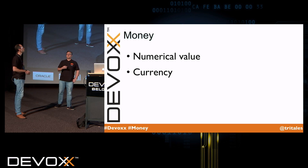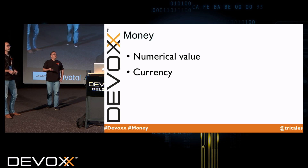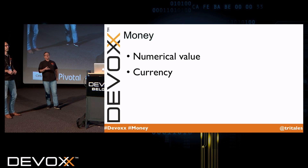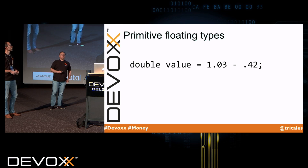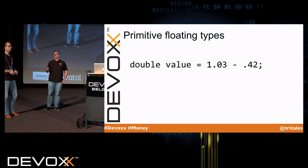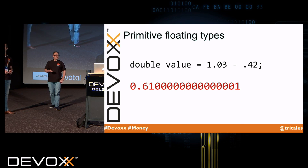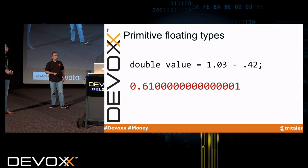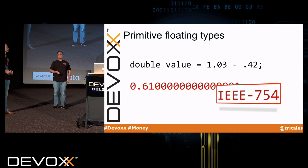So let's have a look at how we would typically go about dealing with money before the JSR came along. As you all know, money is made up of two parts: it has a numerical value and it has a currency. So as a beginning developer, you probably would try to start with a double. As we've seen in the previous talk, not a good idea. It's not because floating types are broken in Java; it's how the IEEE spec is defined.